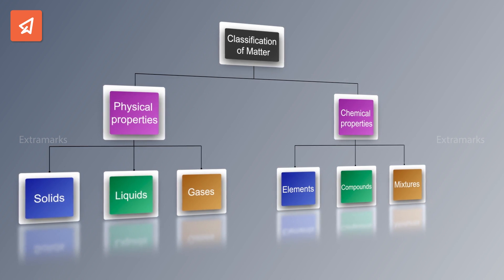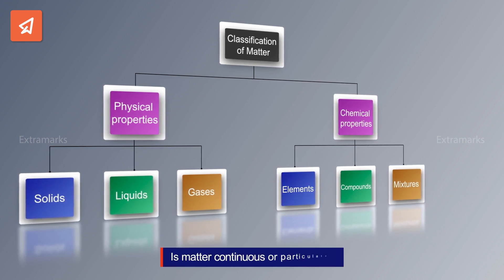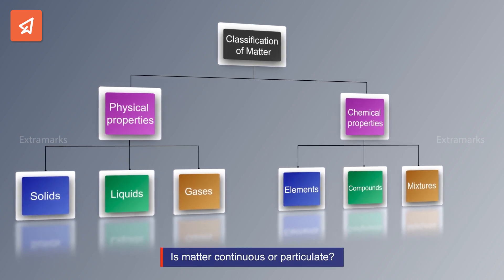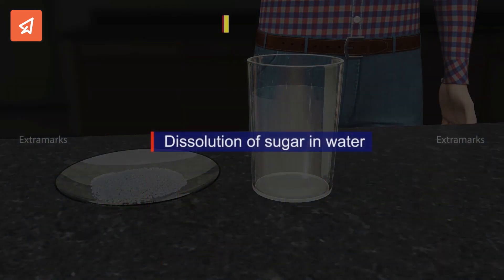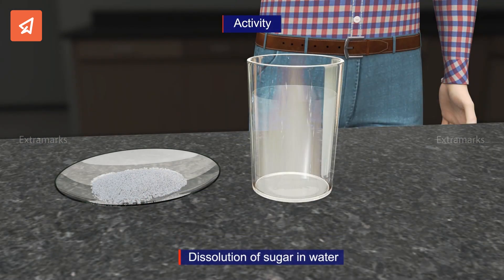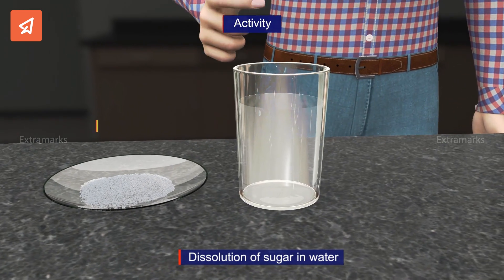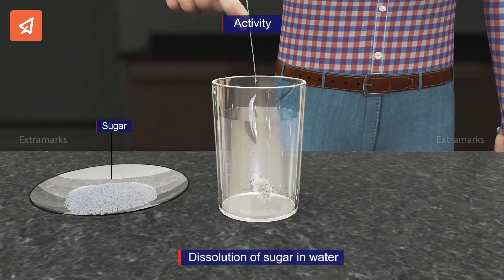Now that we have classified matter, let us try to understand the nature of matter, whether it is continuous or particulate. To answer this, we will discuss the case of sugar dissolved in water. Let us take a glass having water, add a tablespoon of sugar in it, and stir it.